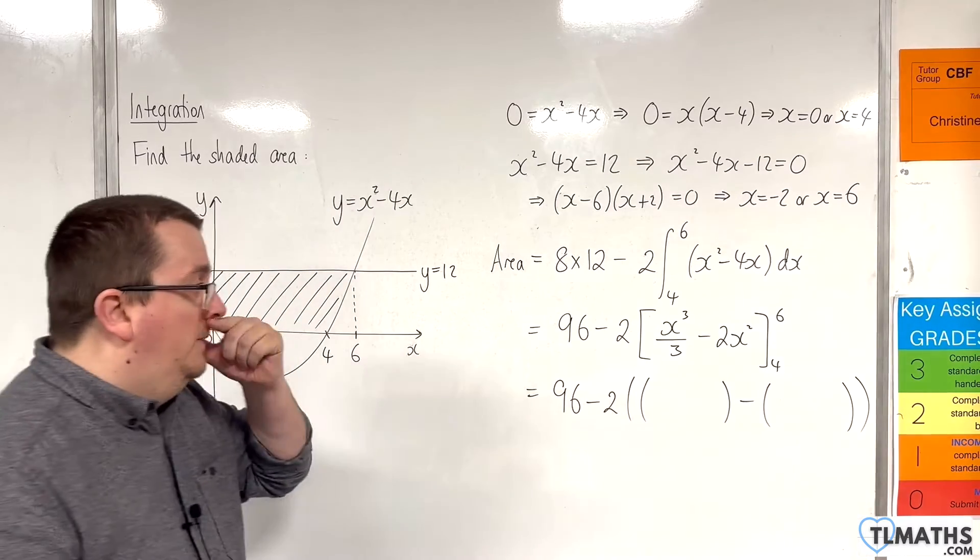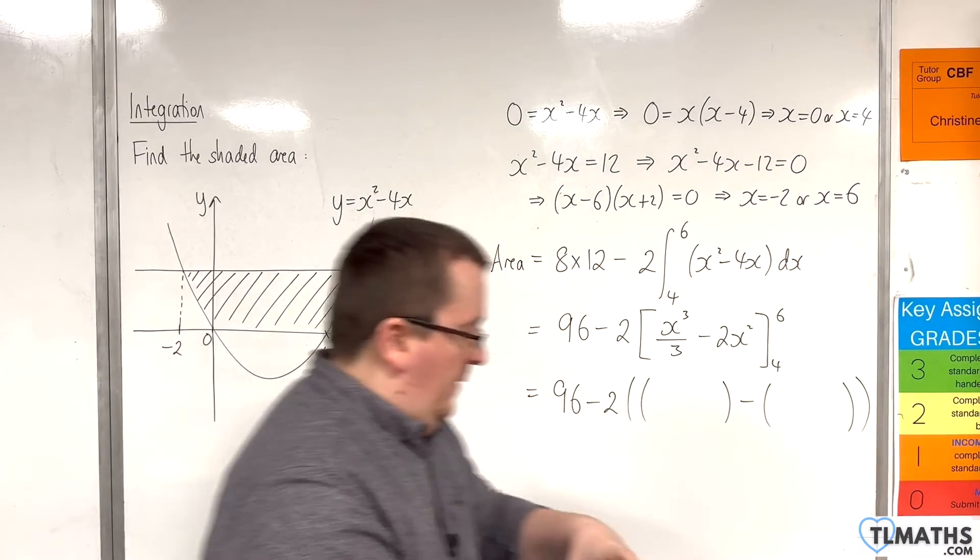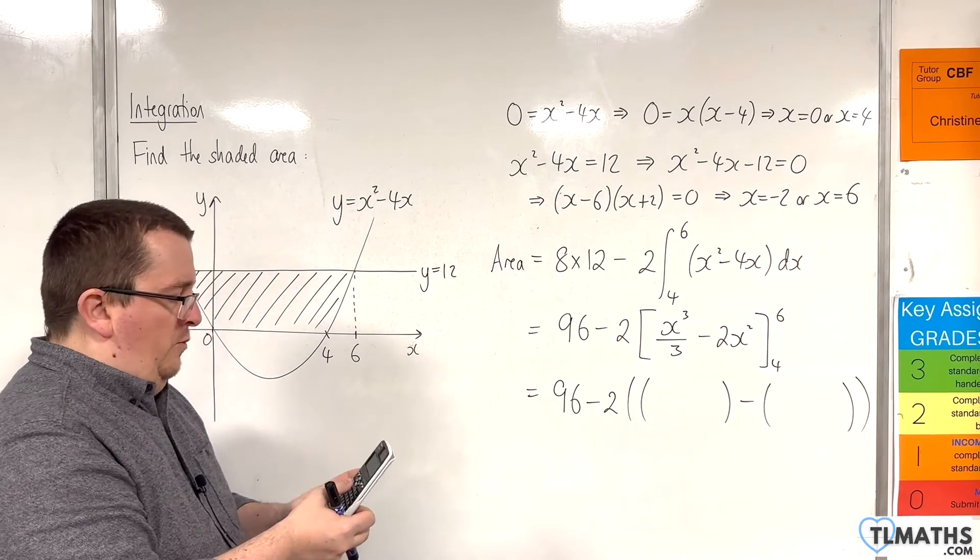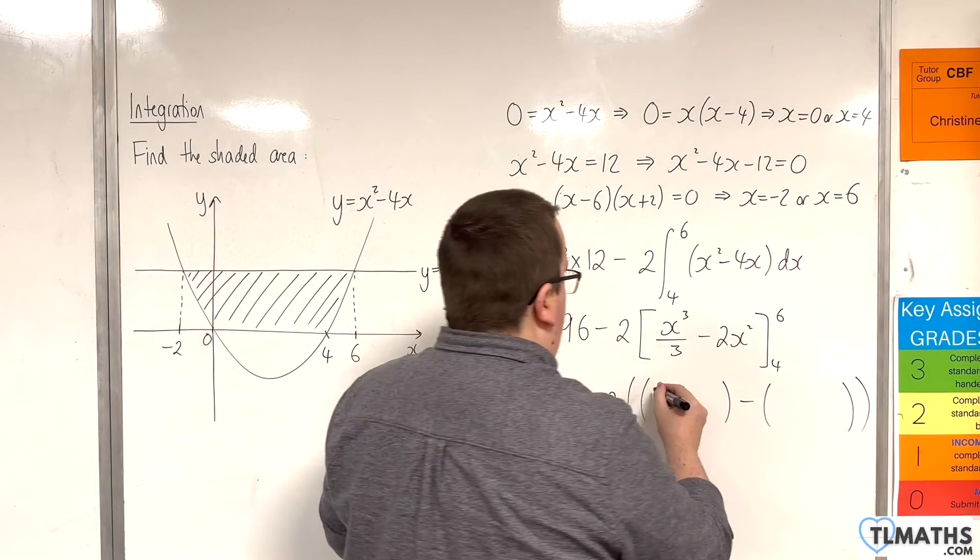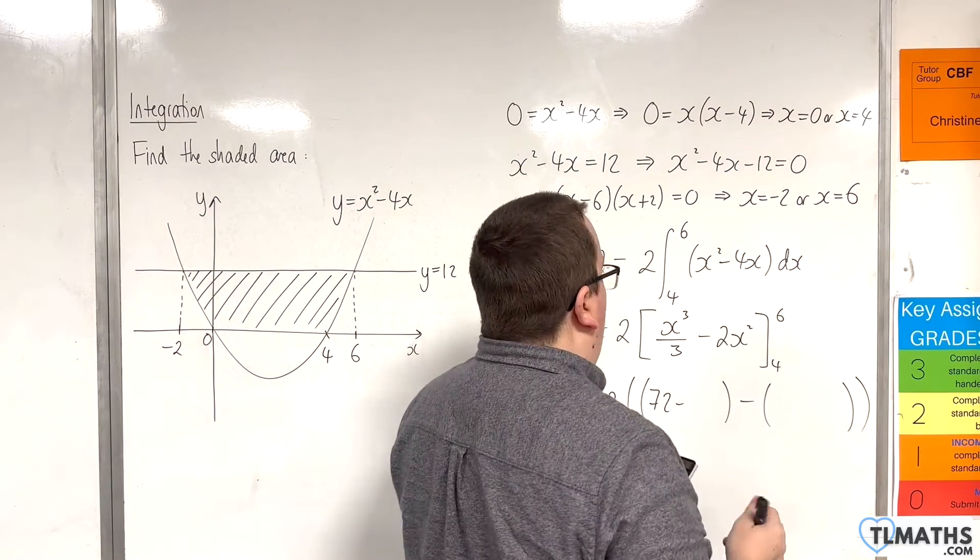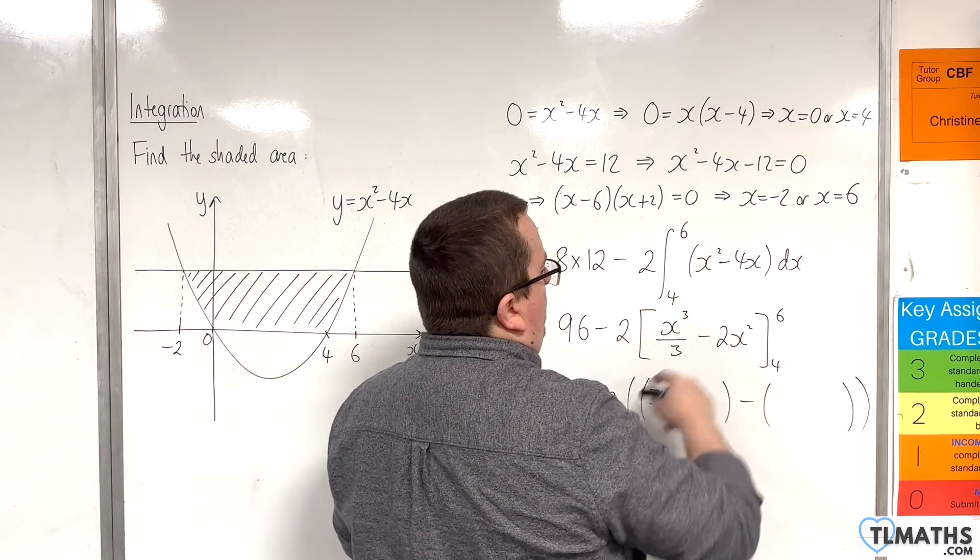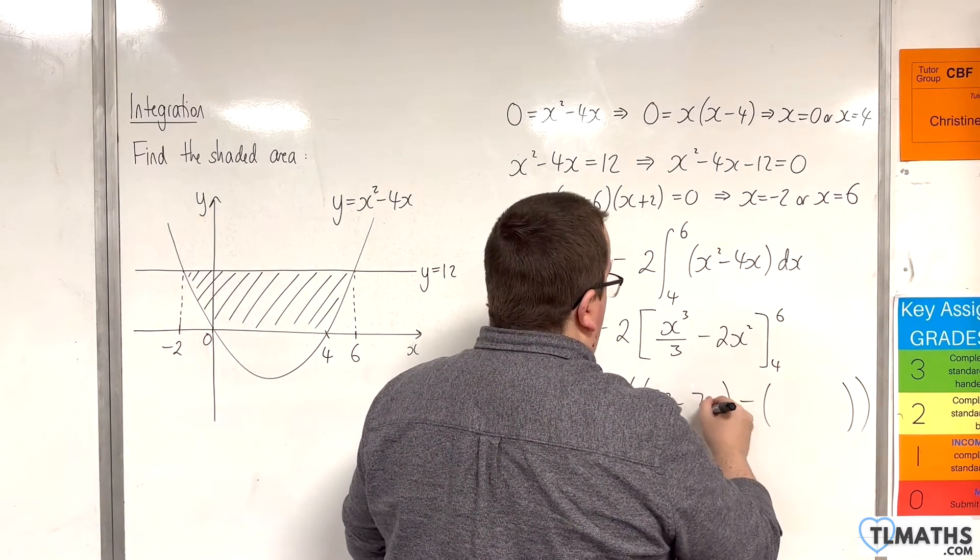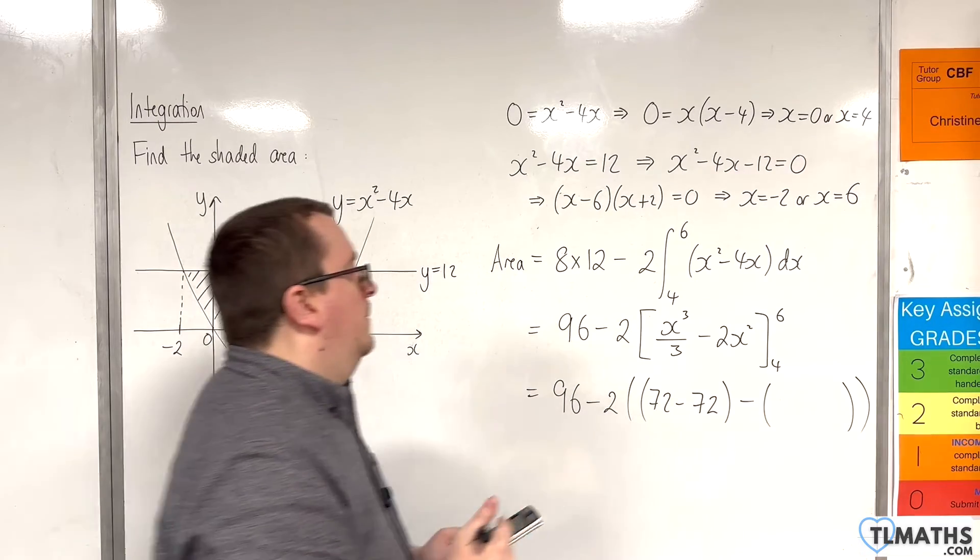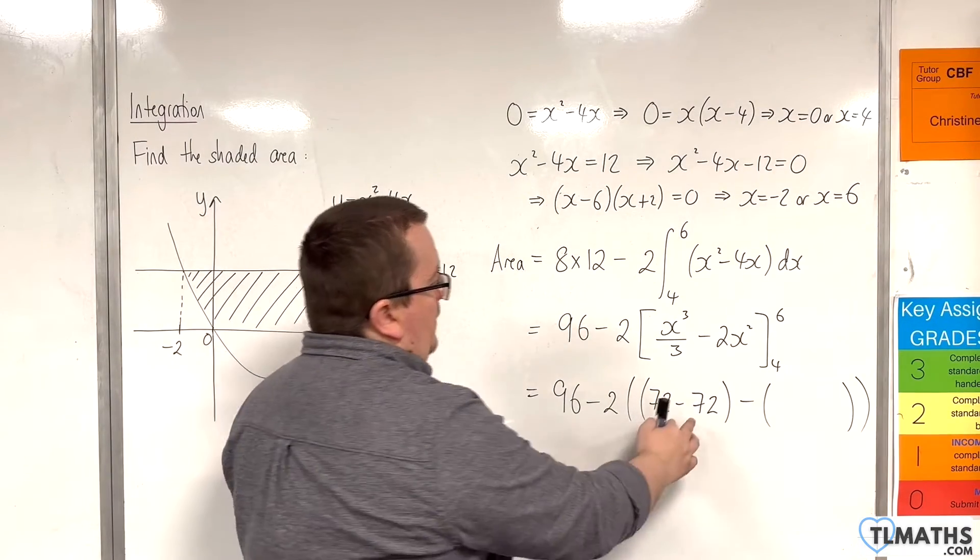We've got 6 cubed divided by 3, so 72, take away two lots of 36, so 72. That's an easy bracket to evaluate.